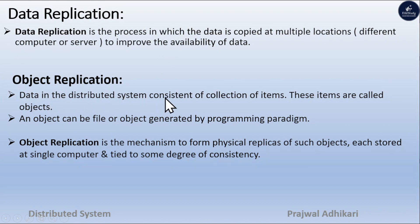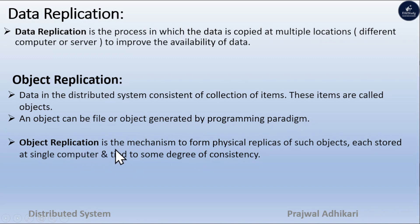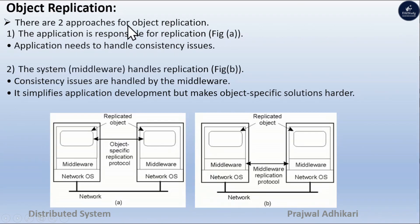Data in the distributed system consists of a collection of items. These items are called objects, and objects can be files or objects generated by the programming paradigm. Object replication is the mechanism to form physical replicas such that an object is stored at a single computer and tied to some degree of consistency.